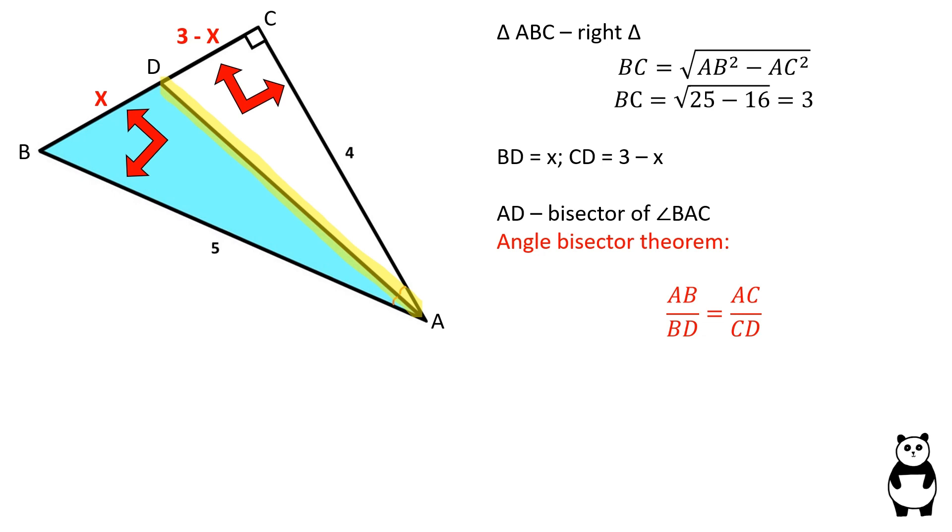AB over BD is equal to AC over CD. If you are not familiar with this theorem, please watch my video on this topic.